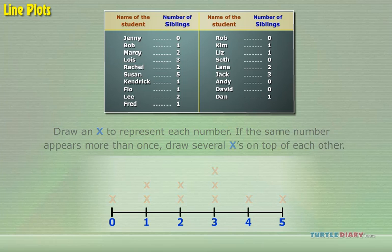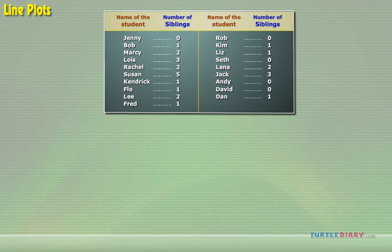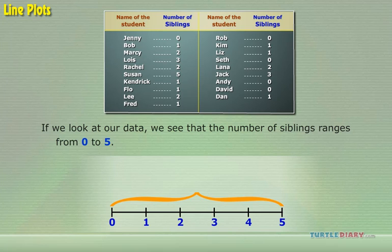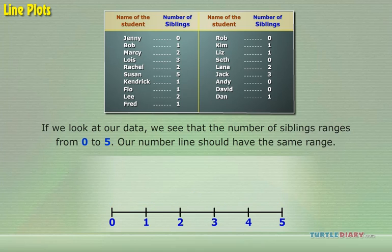Let's practice with the sibling data. Draw a line plot representing the number of siblings of all the students in the class below. If we look at our data, we see that the number of siblings ranges from 0 to 5. Our number line should have the same range. Now, we will go through our list of data and mark it on the number line.